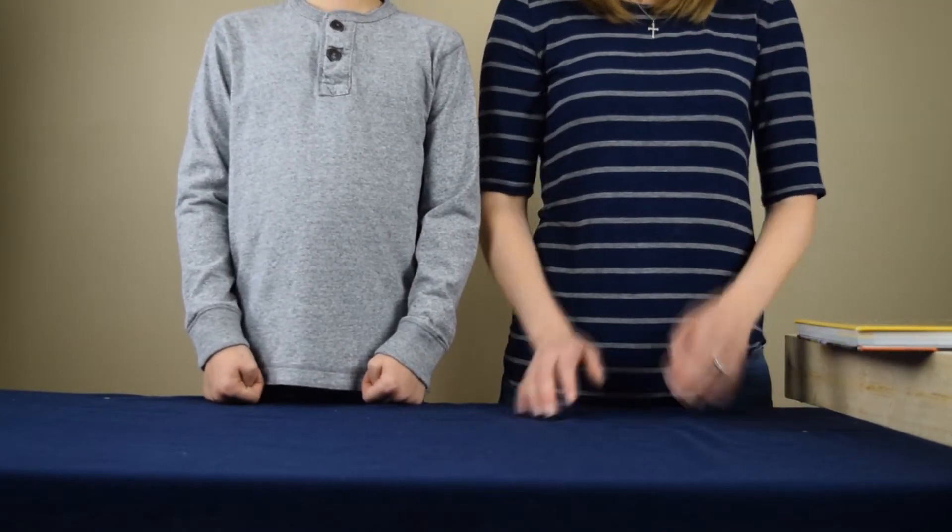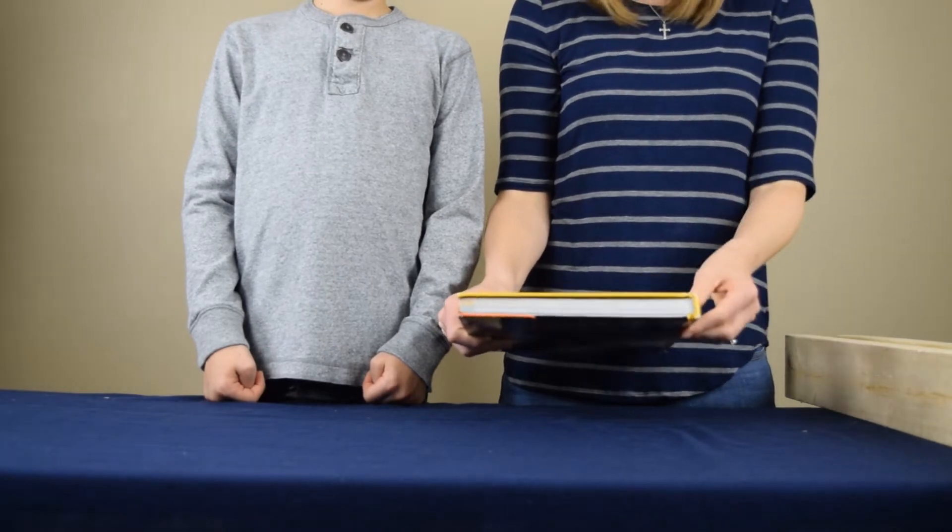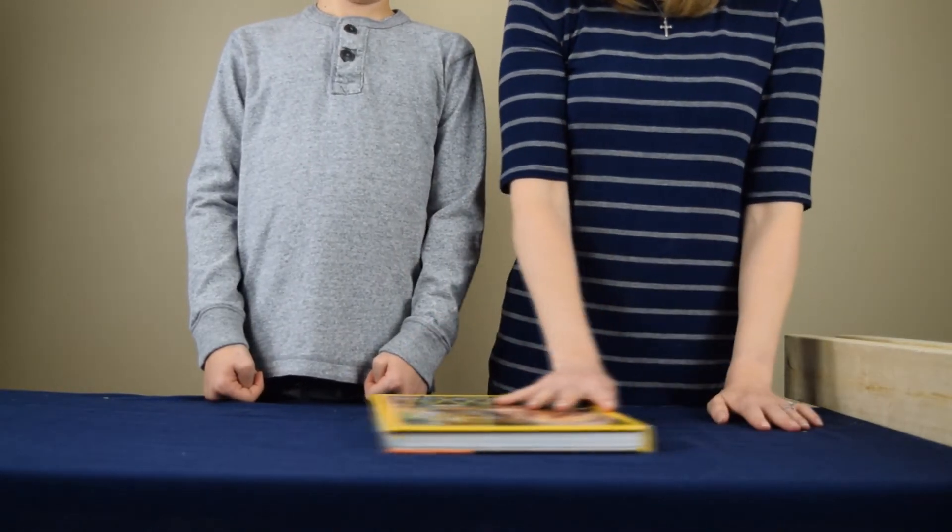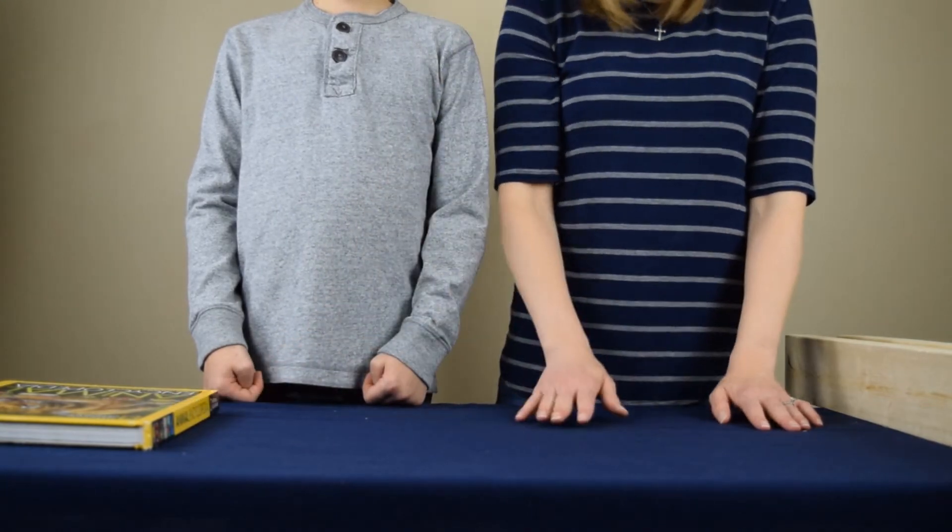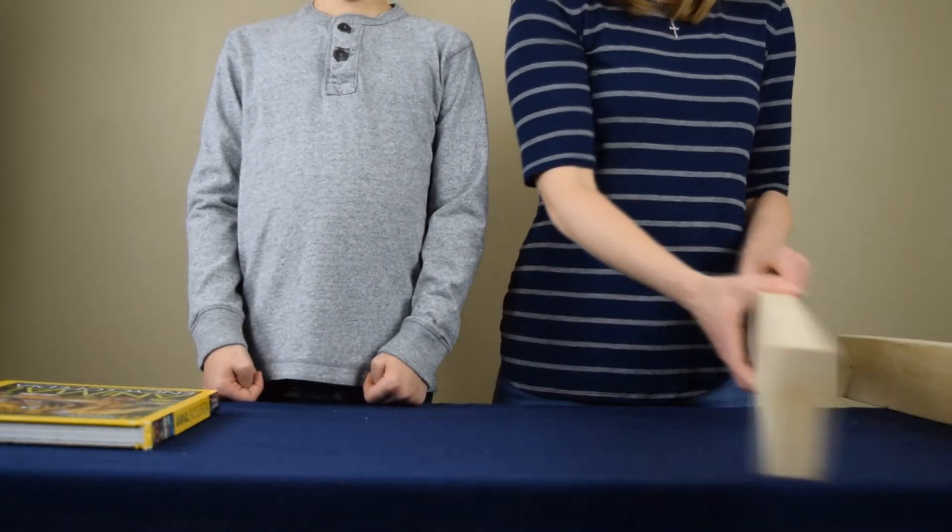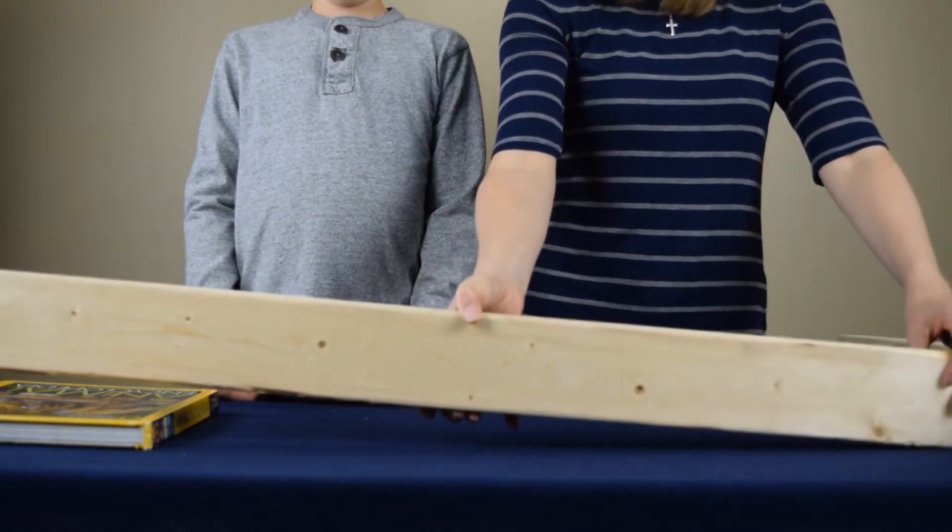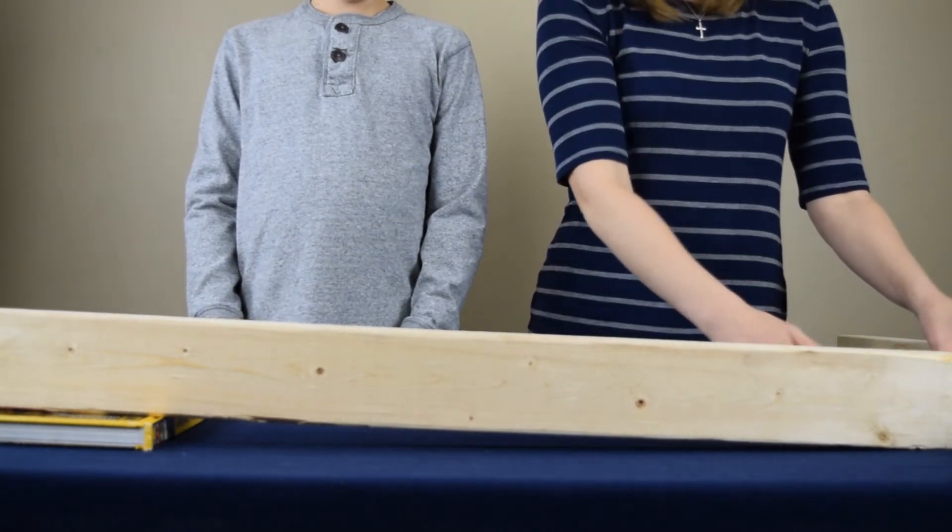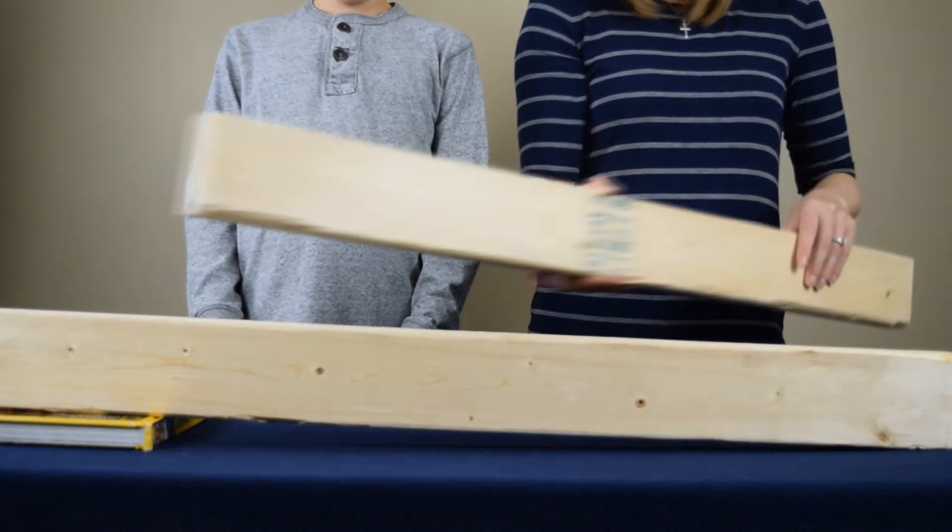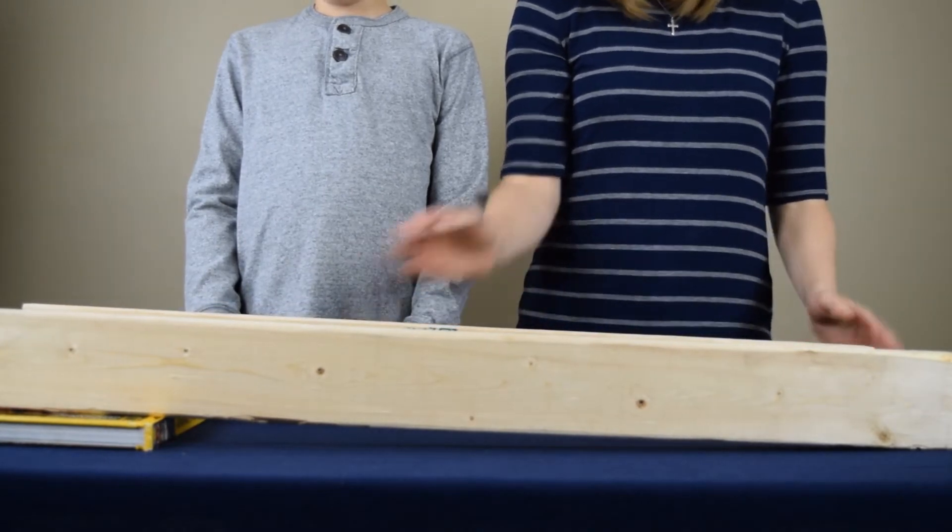To set up the next part of the experiment, you need a large book that is about an inch thick. You're going to place that book on one side of the table or on the floor. You also need two 2x4 boards. What you're going to do is you're going to rest one end of the 2x4 board on the book and the other end on the table or the floor. You're going to put both boards side by side about six inches apart so they are parallel to one another.